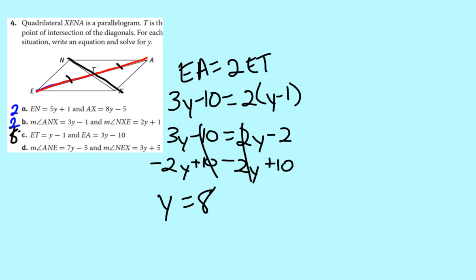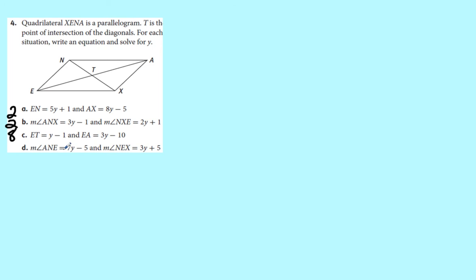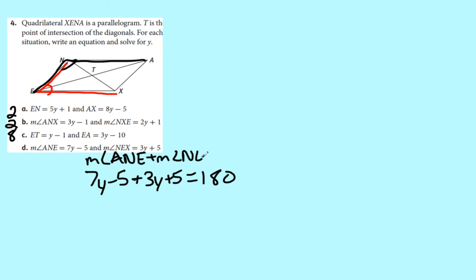One more. So far, so good. So 2, 2, 8. So angle MANE and angle NEX. Those are our two angles. We say, how are they related? Well, since it's a parallelogram, we know consecutive angles are supplementary, which means that if we were to take 7y minus 5, add it to 3y plus 5, this should equal 180. Or we can even write it out. I'm feeling fancy. Main plus min X equals 180.